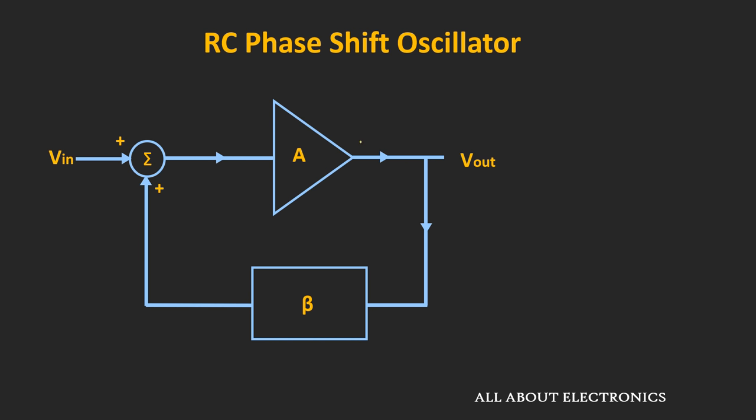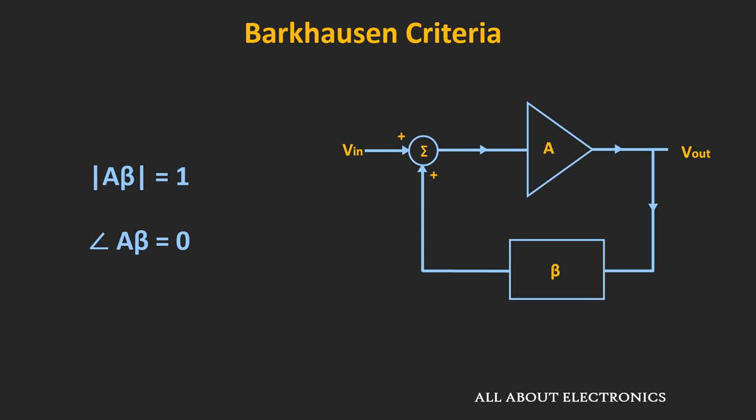In this RC phase shift oscillator, the amplifier provides a 180 degree phase shift, and usually either a transistor or an inverting op-amp is used for amplification. To get sustained oscillations, the loop gain of the oscillator should be equal to 1, and the total phase shift introduced by the amplifier and feedback circuit should be equal to 0 or 360 degrees.